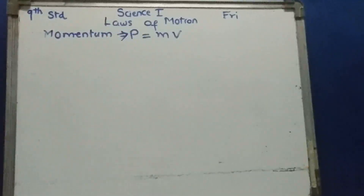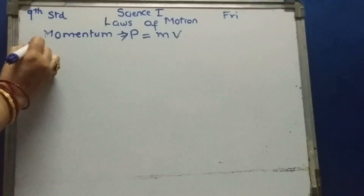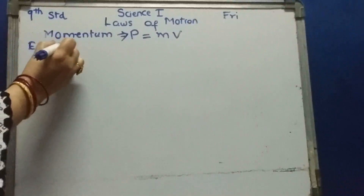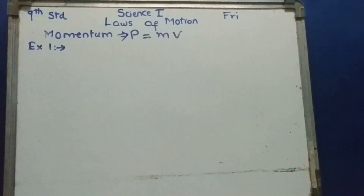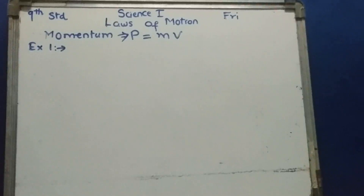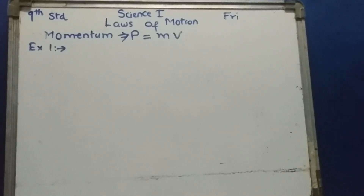Take out page number 16 of your test book. Short examples. Short example number 1: The mass of the cannon is 500 kg and it recoils with a speed of 0.25 meters per second. What is the momentum of the cannon?